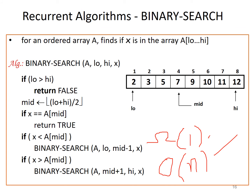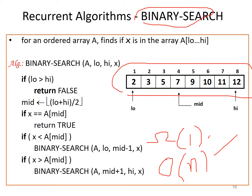Can we have a better algorithm than linear search? Yes — binary search. Binary search is a recursive algorithm. The key condition is that the elements must be sorted. If you have a sorted list and want to search for an element, binary search simplifies the search by adopting a recursive algorithm.